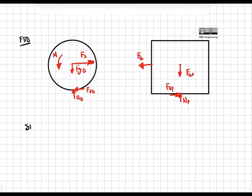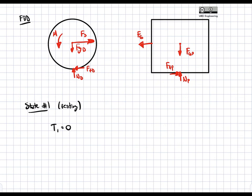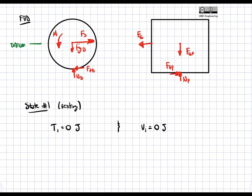Starting with state number one — everything is at rest. So T1 is equal to zero joules, no kinetic energy. We draw our datum along the center of gravity, so V1 is also equal to zero joules: the spring is unstretched so no energy is stored in the spring, and everything is aligned with the datum so there is no gravitational potential energy.